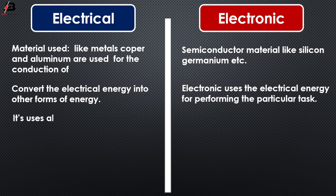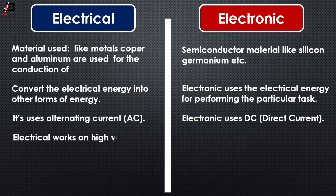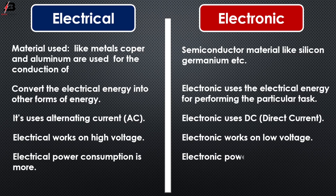Electrical uses alternating current (AC). Electronics uses DC, direct current. Electrical works on high voltage. Electronics works on low voltage. Electrical power consumption is more. Electronic power consumption is less.